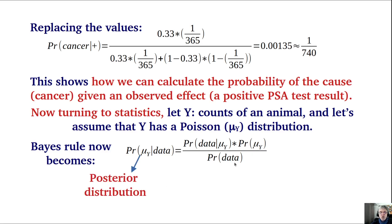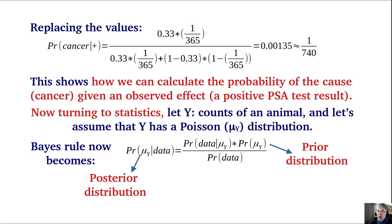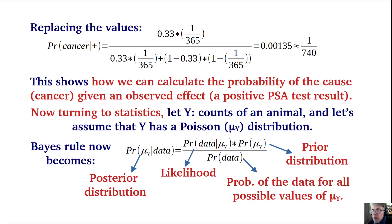The goal of Bayesian statistical estimation is to obtain the posterior distribution — the probability distribution of the parameter after incorporating the data. On the right-hand side, the prior distribution is what we knew about the parameter before seeing the data. The likelihood, subject of the previous video, conveys information from the data. The denominator is the probability of obtaining the data for all possible values of the parameter.